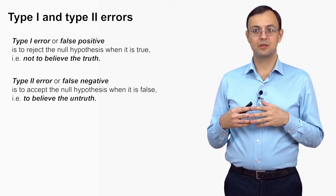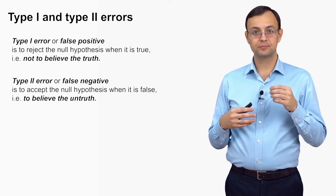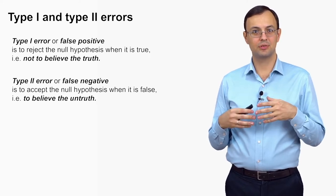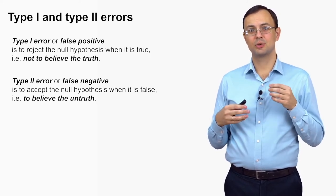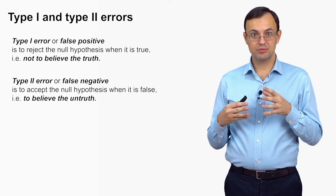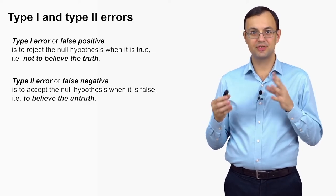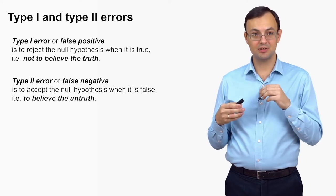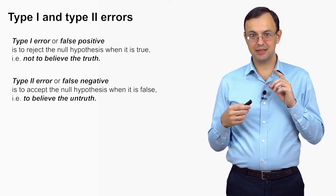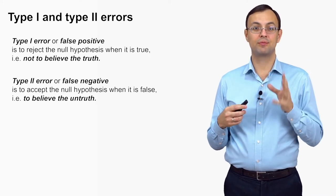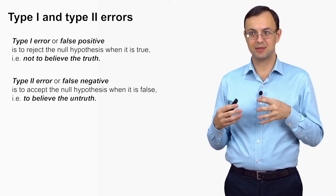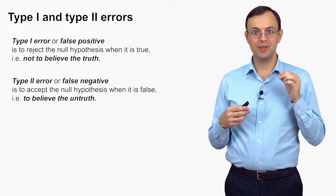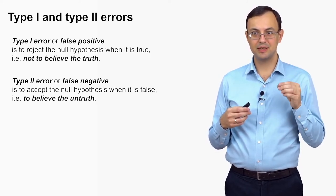Type 2 error — also called false negative — is accepting the null hypothesis when it is false. You choose to accept H₀, but it is actually false. We can say that type 2 error is believing the untruth — believing the false.